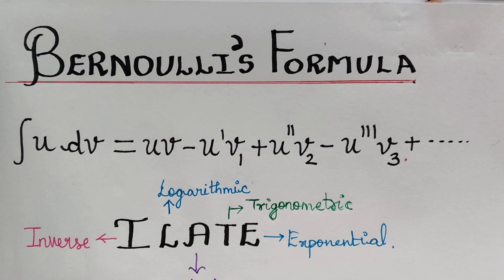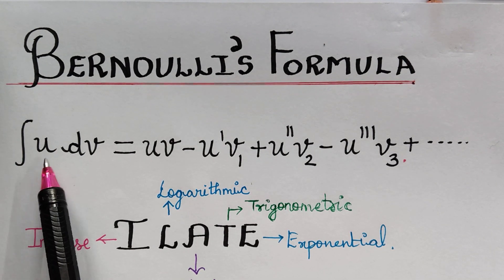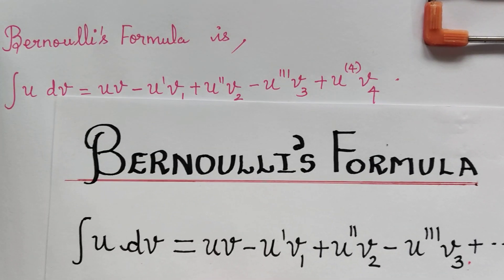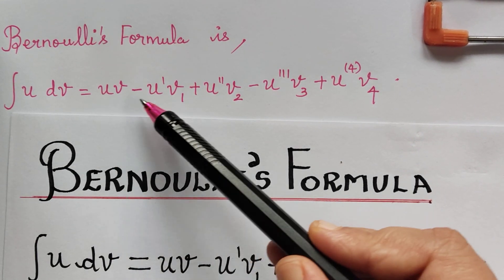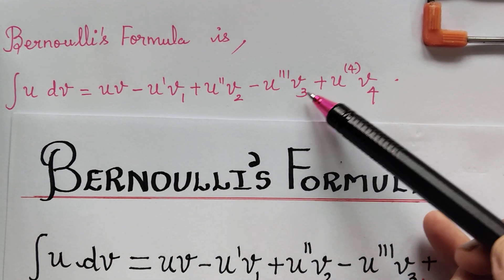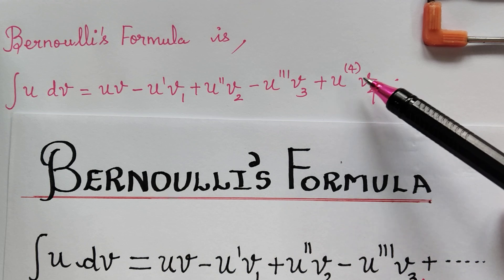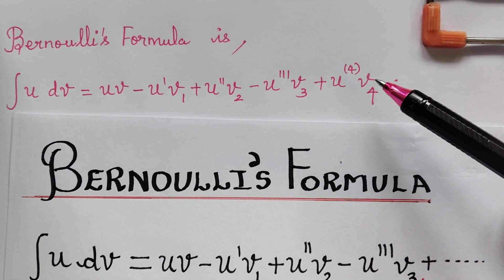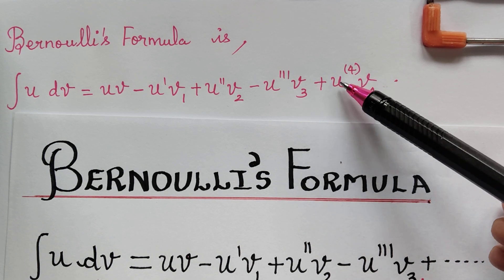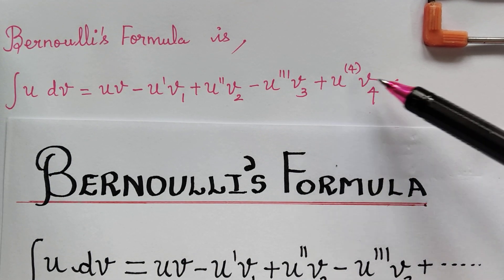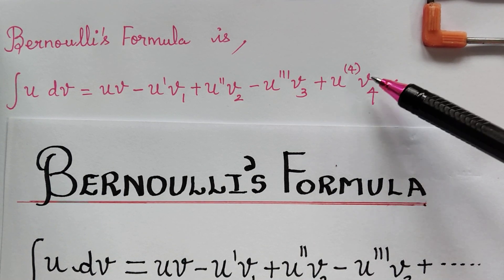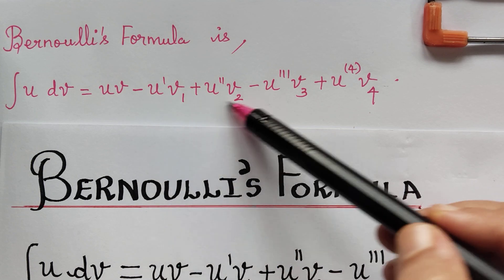Now we apply Bernoulli's formula: integral u dv = uv − u-dash·v1 + u-double-dash·v2 − u-triple-dash·v3 + u⁽⁴⁾·v4. We stop the formula at the u⁽⁴⁾·v4 term because u⁽⁴⁾ is a constant and further differentiation would give zero.